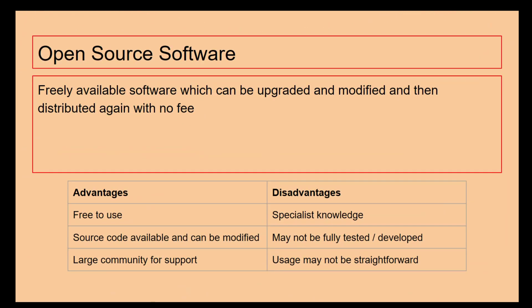So now we are going to be looking at open source software, which is freely available software that can be upgraded, changed, and distributed with no fee. Some examples include the Linux operating system, which people are able to customize, edit, and change with no repercussions.